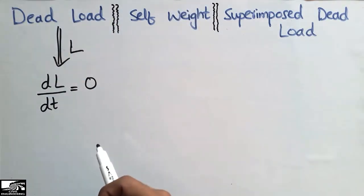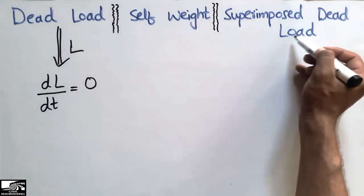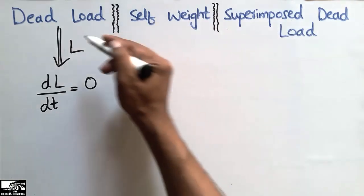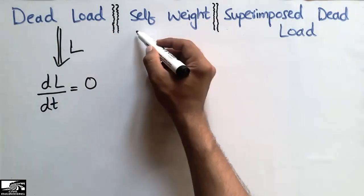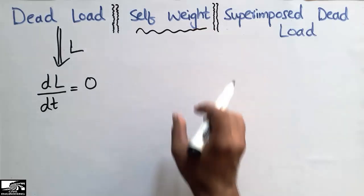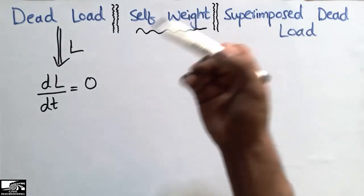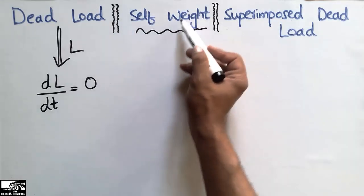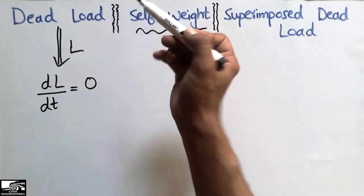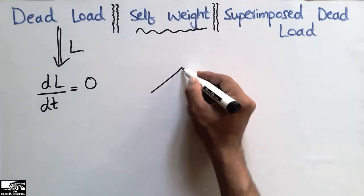We call this type of load the dead load, sometimes also called a permanent load on the building. The self weight and the superimposed dead load are two categories of the dead load. The self weight can be defined as the weight of the structure itself — its name shows that it is the weight of the structure.